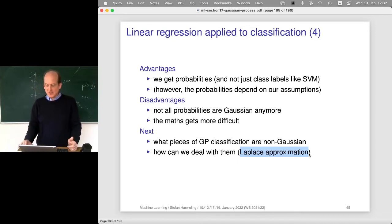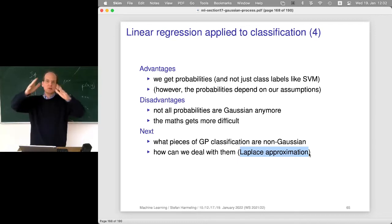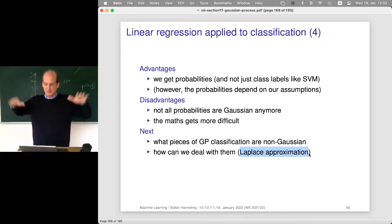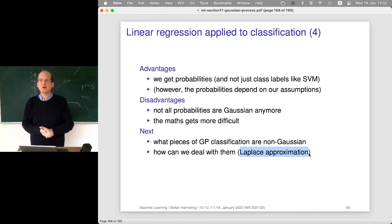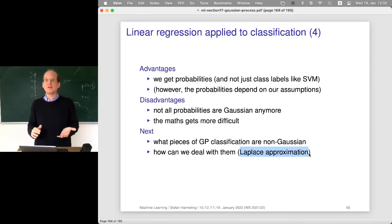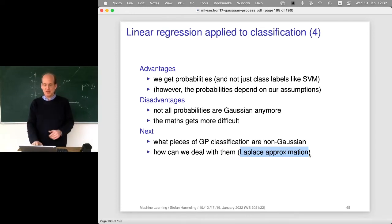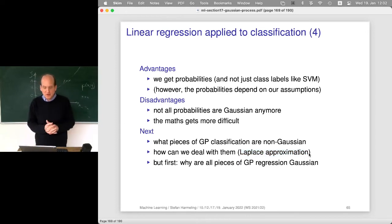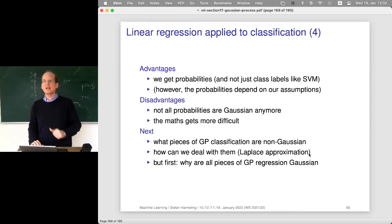However, the Laplace approximation is ideally applicable when you have a unimodal distribution with only one bump. If you have several bumps, the Laplace approximation could be very wrong — the mean of a multimodal distribution could be in an area where there's basically no probability. One needs to be a little careful. Let's look at the pieces of GP regression again and understand how it was, then look at another view of GP regression.